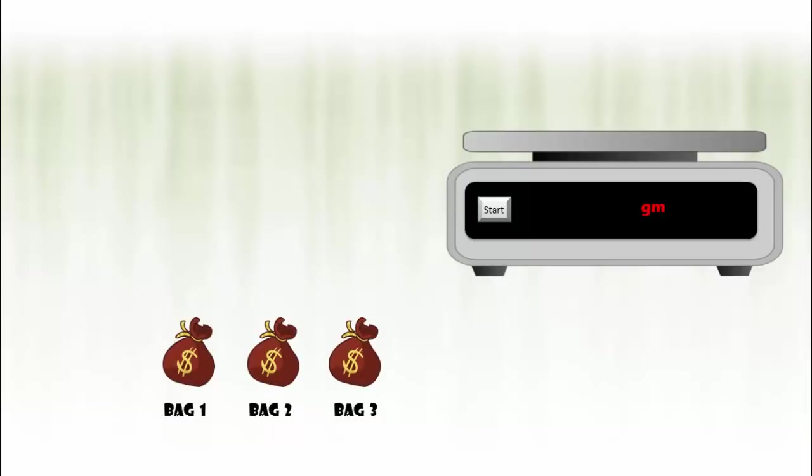From bag 1, take one coin. From bag 2, take two coins. From bag 3, take three coins. Place these coins on the weighing machine. With all perfect coins, we would have got the result displayed as 60 grams.